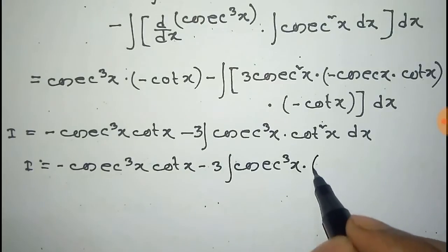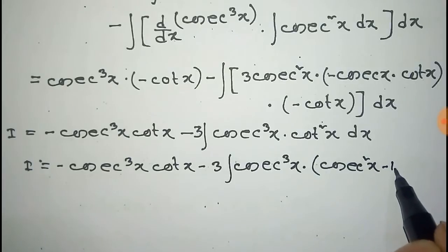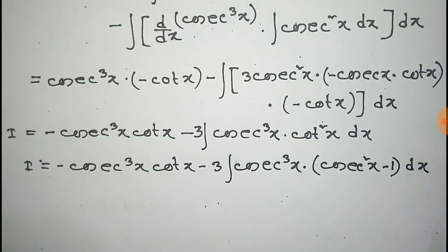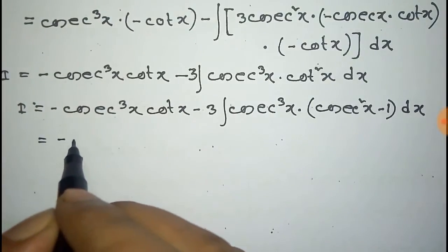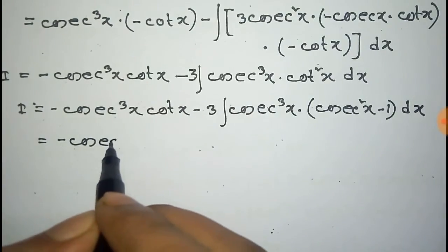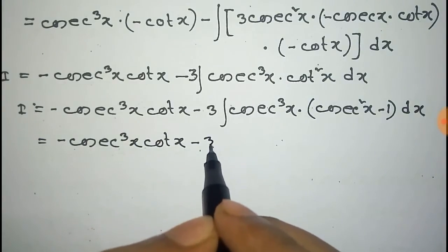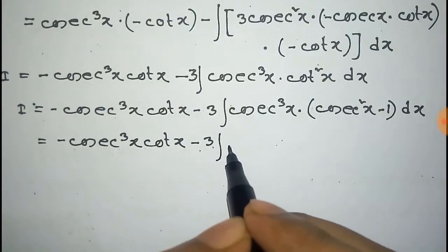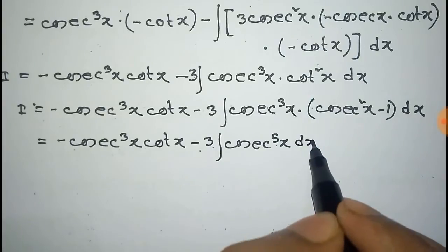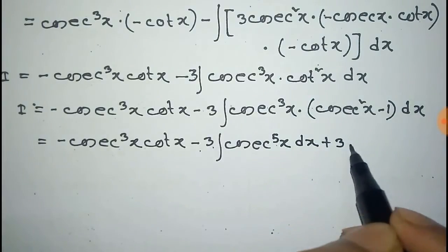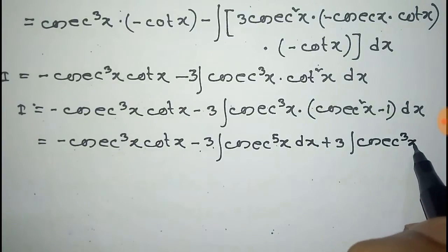We can write cot square x as cosec square x minus 1 into dx. Now multiplying cosec cube x with each element of the bracket, it will be cosec to the power 5x dx plus 3 integration of cosec to the power 3x into dx.